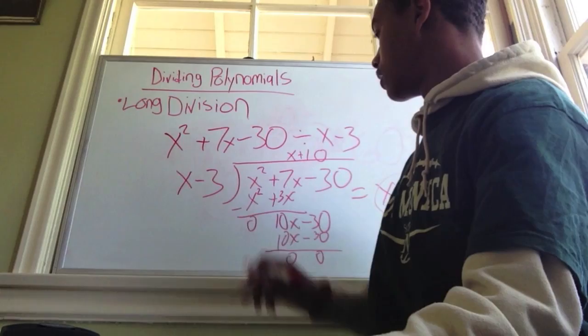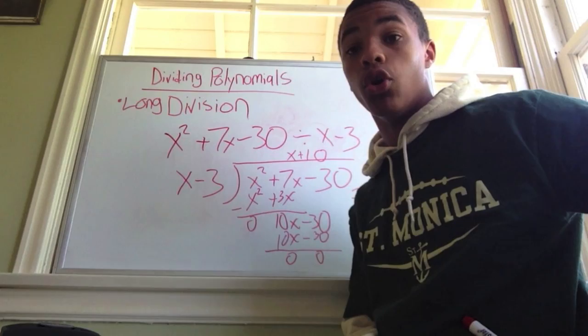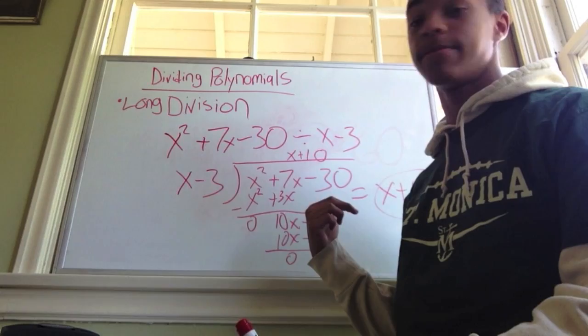X plus 10. And don't worry about the flip part. That's how you do simple long division — that is your quotient, your answer.